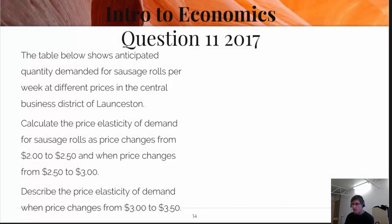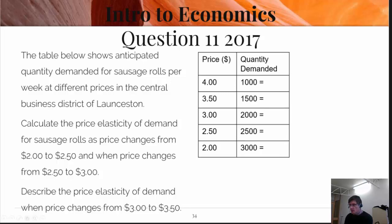Next question, question 11 for 2017. We're talking about elasticity. The sausage rolls have increased in price. Importantly what you have to do is work out what the total revenue or total outlay is for each one of these sections. They've asked us specifically to go from $2 to $3. So you calculate that one, calculate that one and then you'd also have to calculate the others in order to answer the last question.